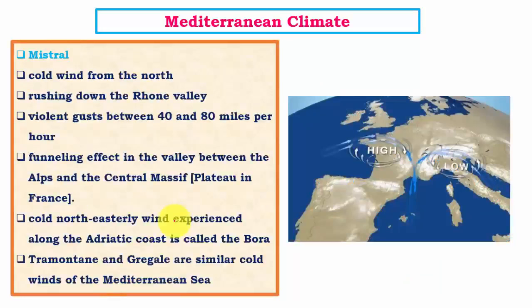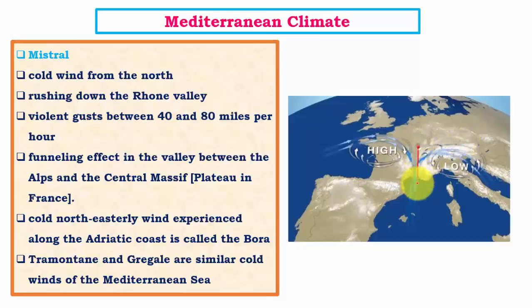Another important local wind is the Mistral, which flows along the Rhone Valley — the valley between the Central Massif plateau in France and the Alps on the eastern side in northern Italy. This valley experiences a very cold wind called Mistral, which can bring extremely cold climatic conditions, especially in early spring. It is a violent and harmful wind that drops temperatures to very low levels and brings blizzards and other adverse weather. Similar winds include Tramontane and Grigel, all typical to the Mediterranean region.